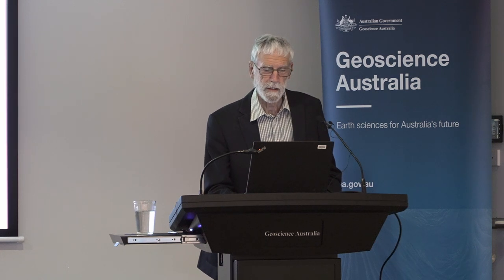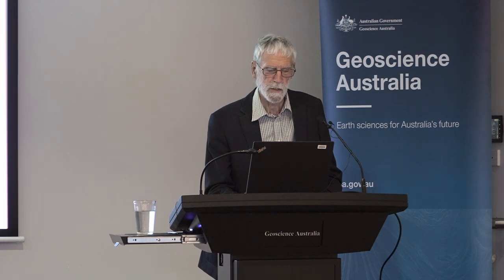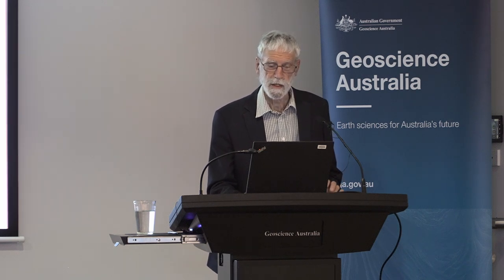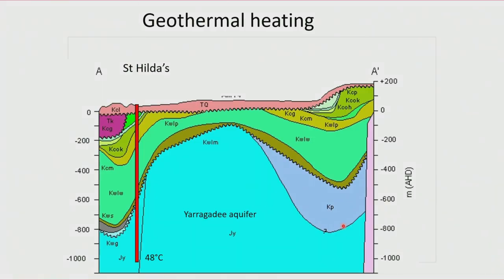That subsidence is now being reversed. The Water Corporation has a program to treat wastewater with reverse osmosis and re-inject it into the Leederville and Yarragady aquifers, so those groundwater pressures are going to increase. There are also other uses for deep groundwater in Perth — about 16 geothermal bores heating swimming pools. The St. Hilda's bore is the deepest at 1,000 metres, getting water at 48 degrees centigrade, extracting the heat and re-injecting the cooled water higher up into the Yarragady.